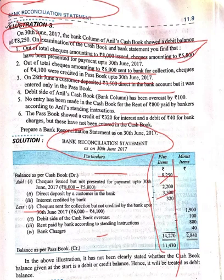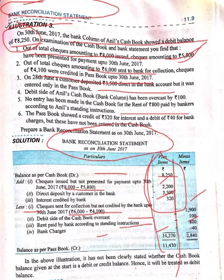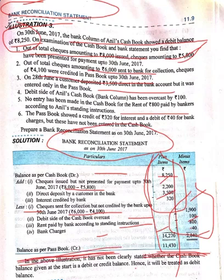On the less side: cheques sent to bank for collection but not yet collected — 6,000 total, only 4,100 credited, so 1,900 is still awaited. Debit side of cash book overcast: 100 rupees. Rent paid by the bank as per standing instructions: 800. Bank charges: 40. Adding the plus items gives 14,270, and adding the minus items gives 2,840. Subtracting 2,840 from 14,270 gives 11,430, which is our balance as per pass book.